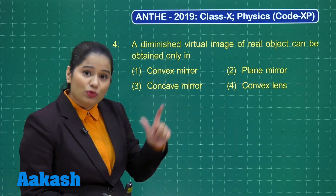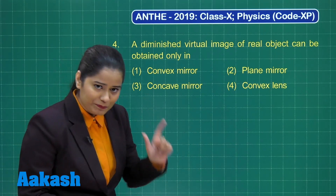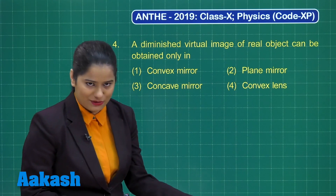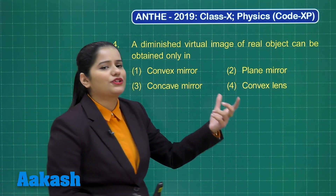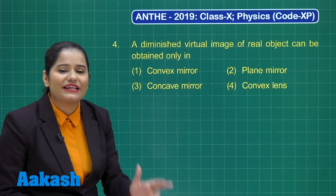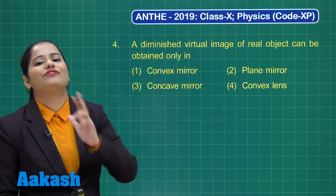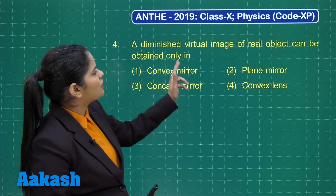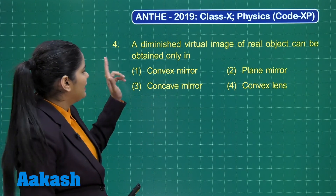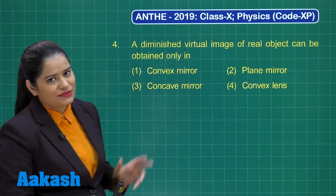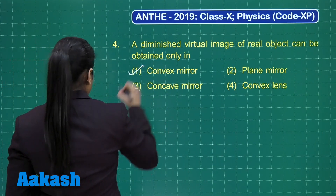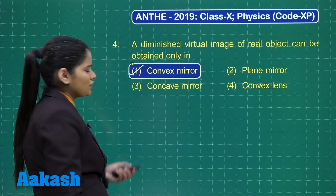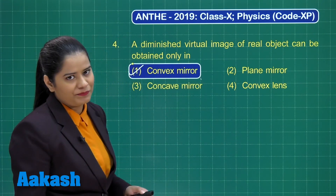Concave mirror does form a virtual image, but it is always going to be magnified. Convex lens also forms a virtual image, but that is also a magnified image. So the only mirror that forms a diminished virtual image of a real object is the convex mirror. The correct answer is option number 1.